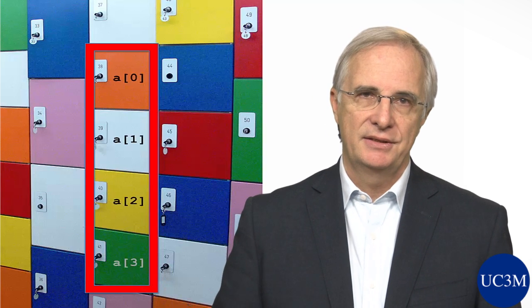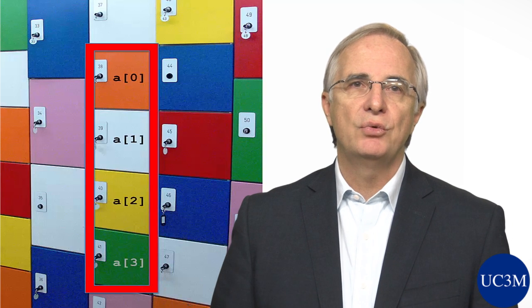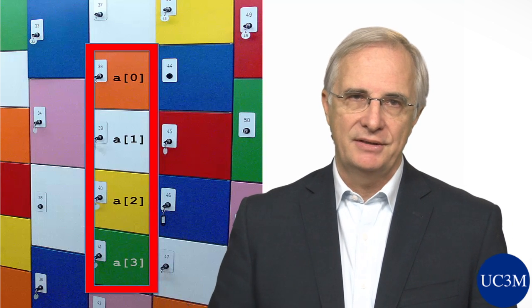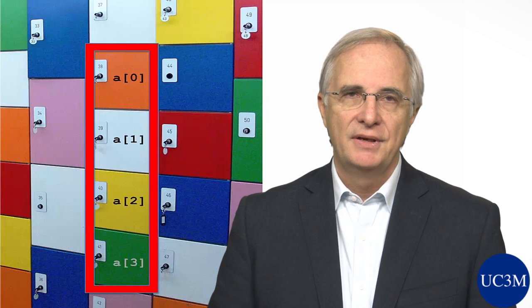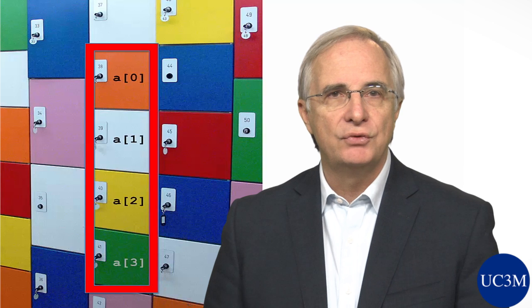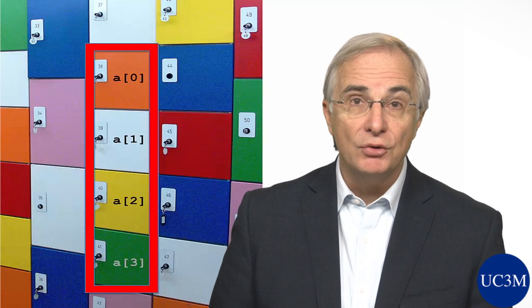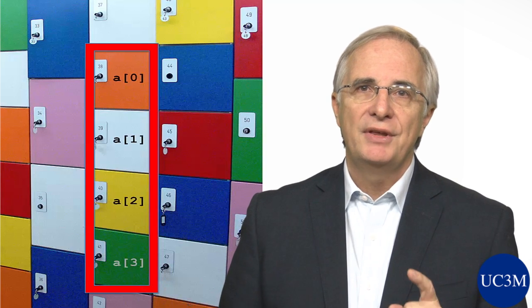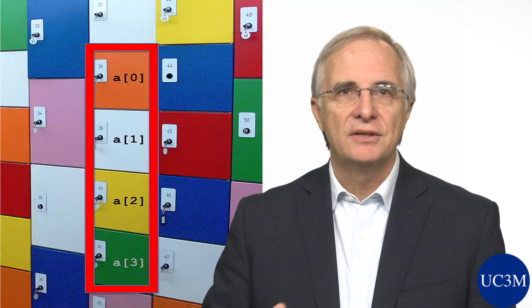So for instance we could call an array A. Assume it has four elements, four places. Then we would refer to each position by adding an index in square brackets. In this example we would have A of 0, A of 1, A of 2 and so on. Note that we start with index 0 and increment one by one.